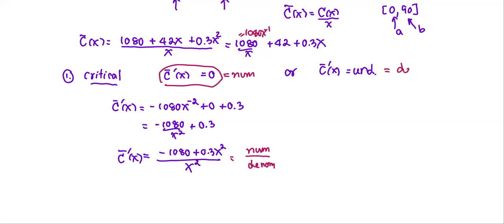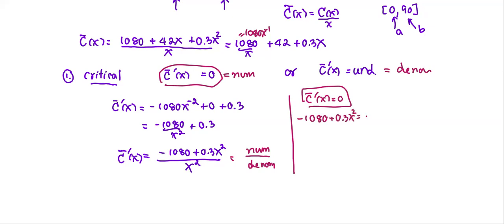For C̄' = 0, we set the numerator to 0: -1080 + 0.3x² = 0. Solving for x: x² = 1080 / 0.3 = 3600, so x = 60 (discarding the negative root since x is a production level). Since 60 is between 0 and 90, we keep it as a critical value.